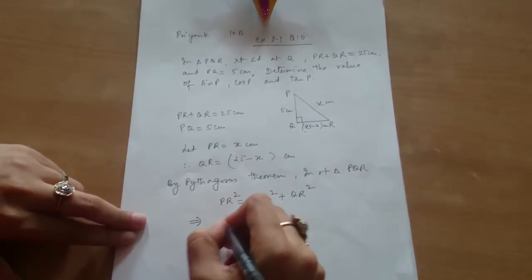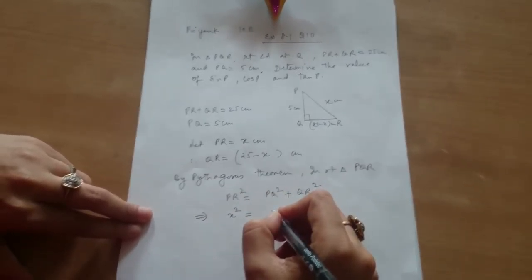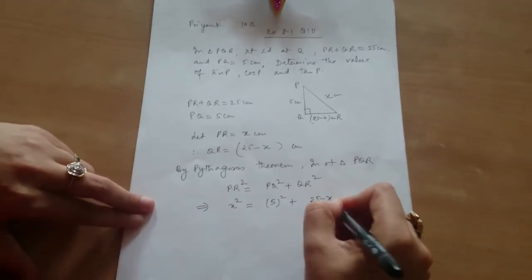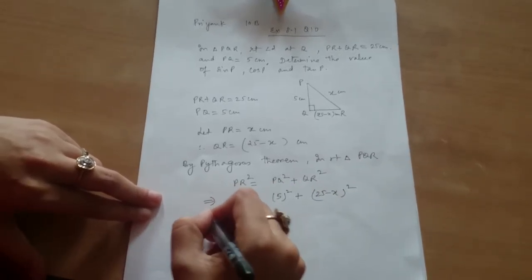This implies X square equals 5 square plus 25 minus X, the whole square.